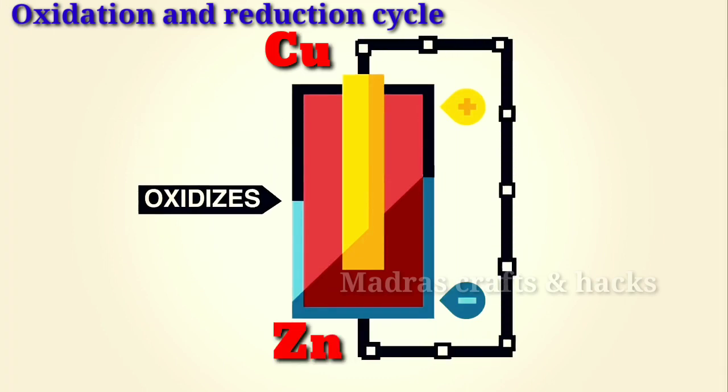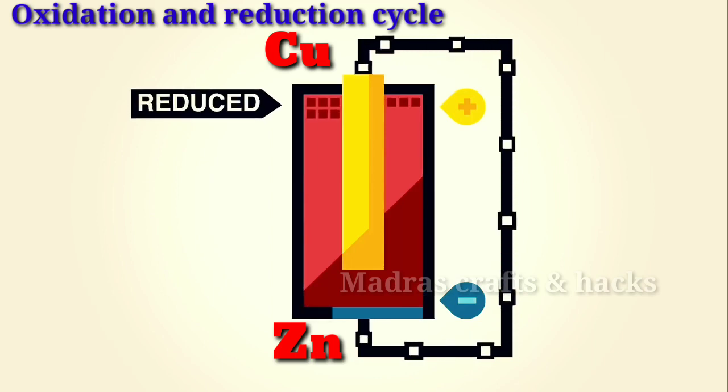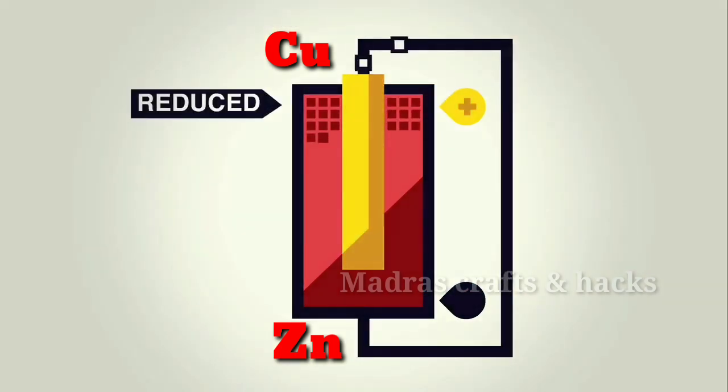As this oxidation and reduction cycle takes place continuously, once all the zinc is oxidized, the battery will stop producing electricity and it will die.